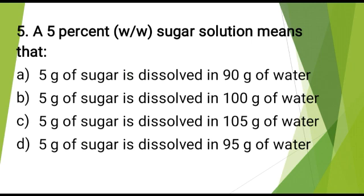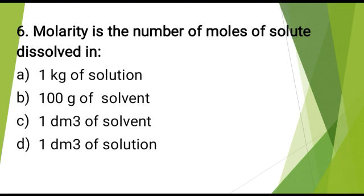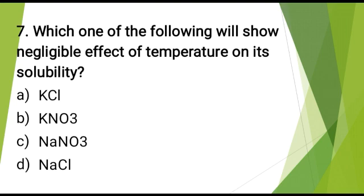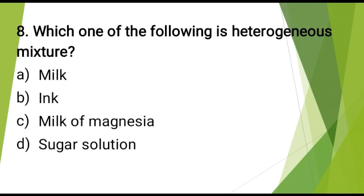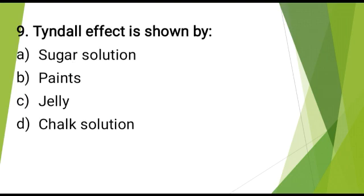A 5% W/W sugar solution means that? The correct answer is: 5 g of sugar is dissolved in 95 g of water. Molarity is the number of moles of solute dissolved in? The correct answer is: 1 dm³ of solvent. Which one of the following will show negligible effect of temperature on its solubility? The correct answer is: NaCl. Which one of the following is a heterogeneous mixture? The correct answer is: milk of magnesia.